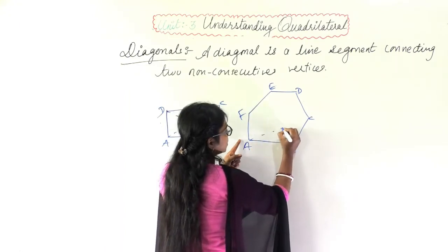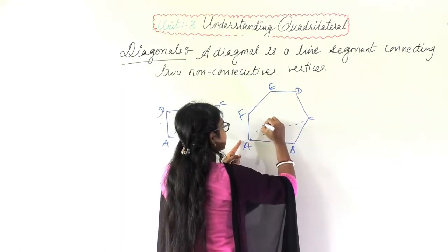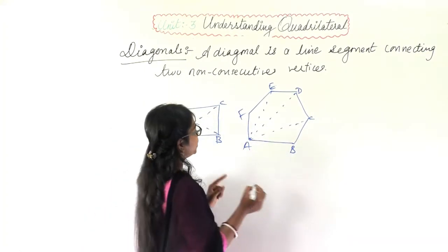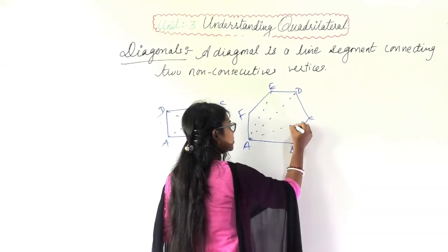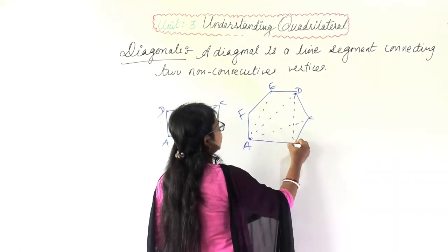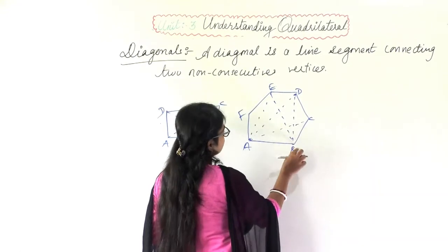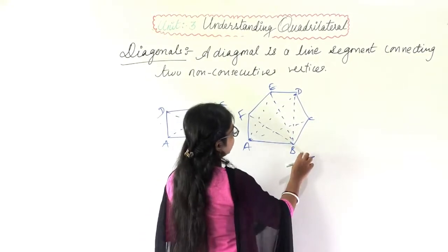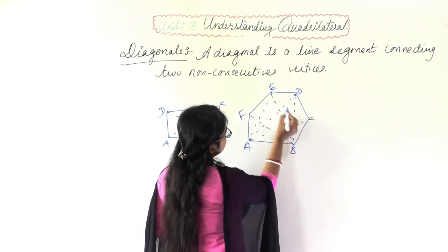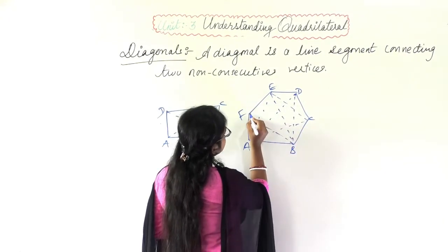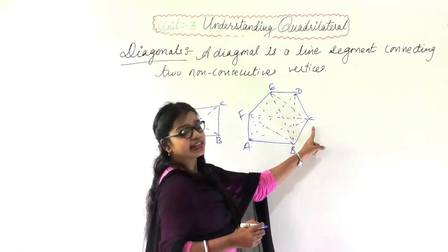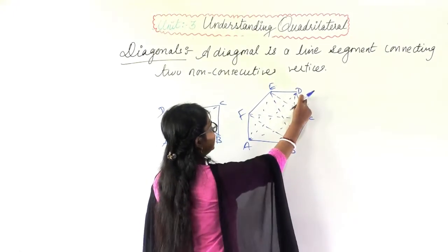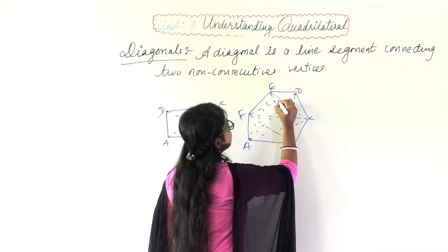AB is already a side, so I can connect A with C, A with D, and A with E — these are diagonals. From B, I can draw BD, BE, and BF. From C, I can draw CE and CF. From D, I can draw DF. So these are the diagonals of the polygon.